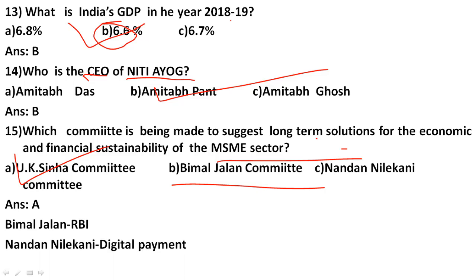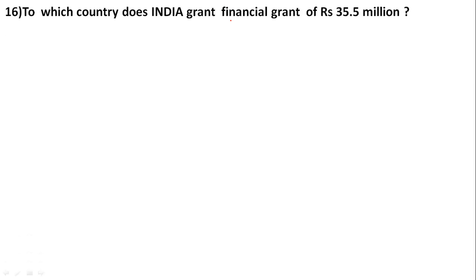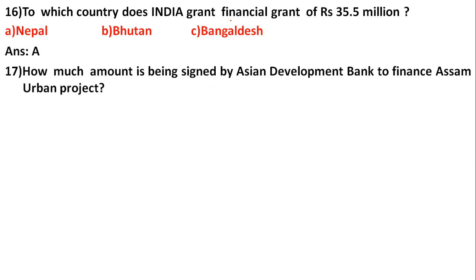To which country does India grant a financial grant of rupees 35.5 million? The options are Nepal, Bhutan, and Bangladesh. The correct answer is Nepal.